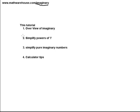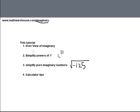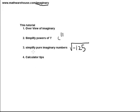The tutorial is going to follow these four steps. First, I'm going to give a brief overview of imaginary numbers — what they are. Then we're going to look at how you could simplify powers of i, and easily be able to simplify i to any power. Then, how do we simplify pure imaginary numbers? And lastly, a few quick calculator tips on how you can do a lot of this with most graphing calculators.